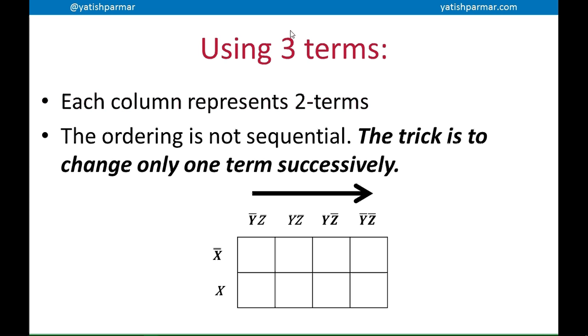So each column is basically represented by two terms. Remember, the ordering is not sequential. If you look at the K-map, you can see that between each column, only one term is changing. From the first column to the second column, y changed. From the second to the third, z changed. From the third to the fourth, y changed. And you can see if you roll over the edge of the K-map back to the other side, from the fourth column to the first column, z changed. And that's important. You can roll off the end of the K-map back onto the other side.